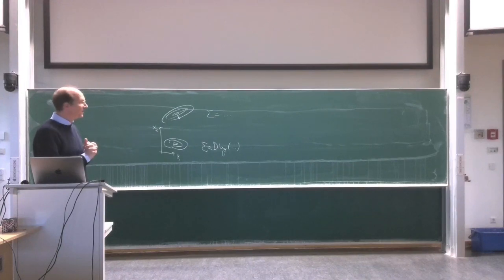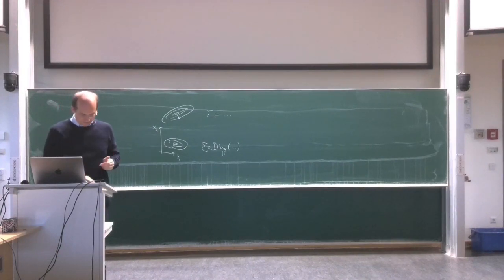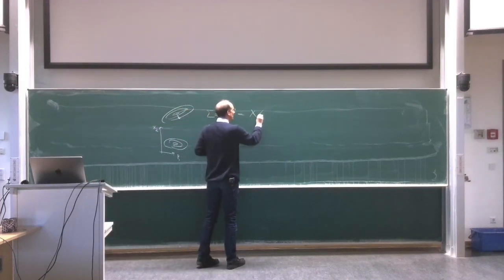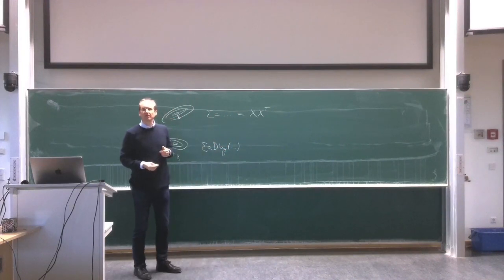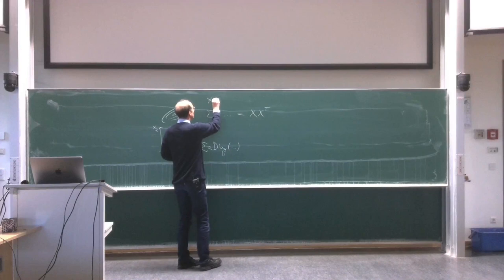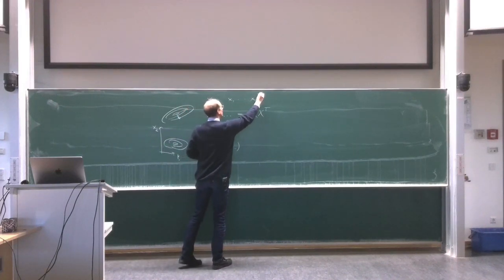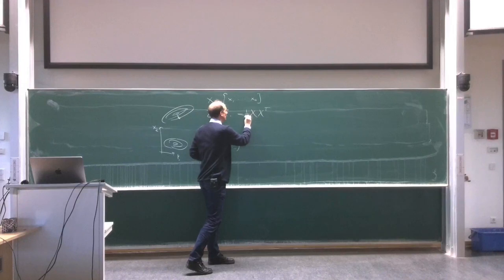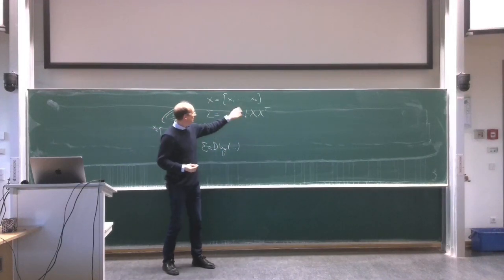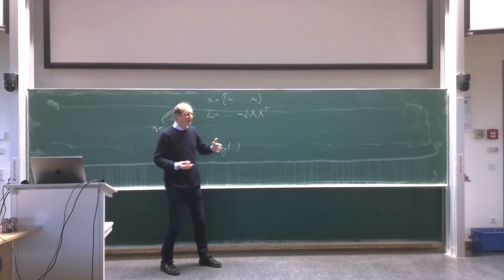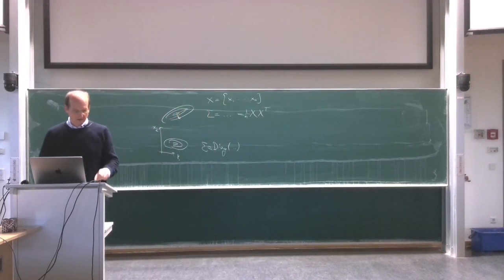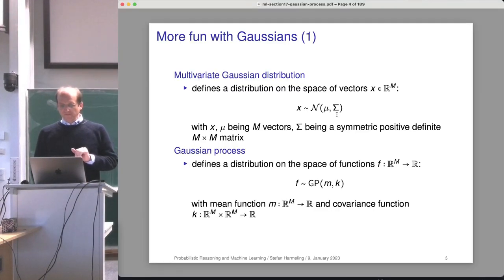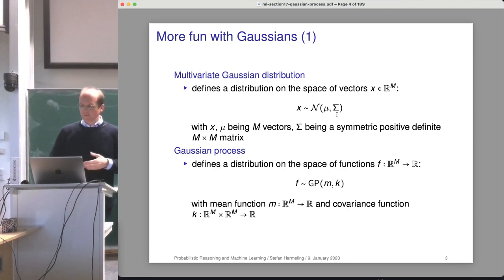Covariance matrices are positive definite because they are defined as the outer product of vectors. If X is the big dataset X1 to XN where each column is a data point, the covariance matrix can be written as X times X^T divided by N. You can see that sigma is the square of some other matrix, and that is exactly this positivity.